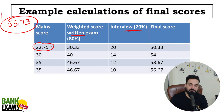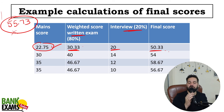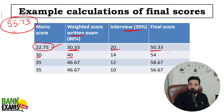If you are able to score 22.75, toh aapka weighted score out of 80 banta hai 30.33. Even if you score 20 marks in the interview, you will be able to score 50.33, which is far away from the final cut-off. So you won't be able to crack the cut-off — aur aapka selection nahi ho sakta, chahe aap 20 mein se 20 marks le lein interview mein. In case aap 30 marks lete ho out of 60, toh aapka weighted score out of 80 banta hai 40. Interview mein 14 marks lete ho, toh 54 score banta hai — you are not able to crack the final cut-off.